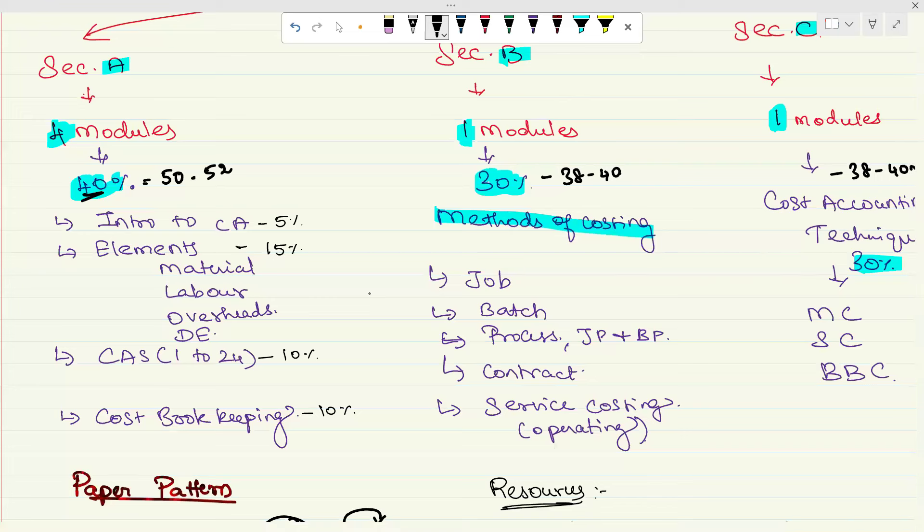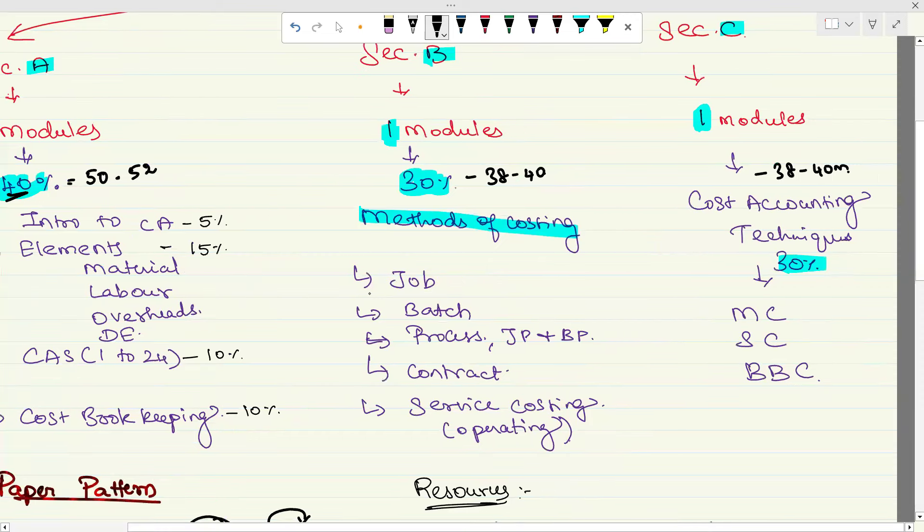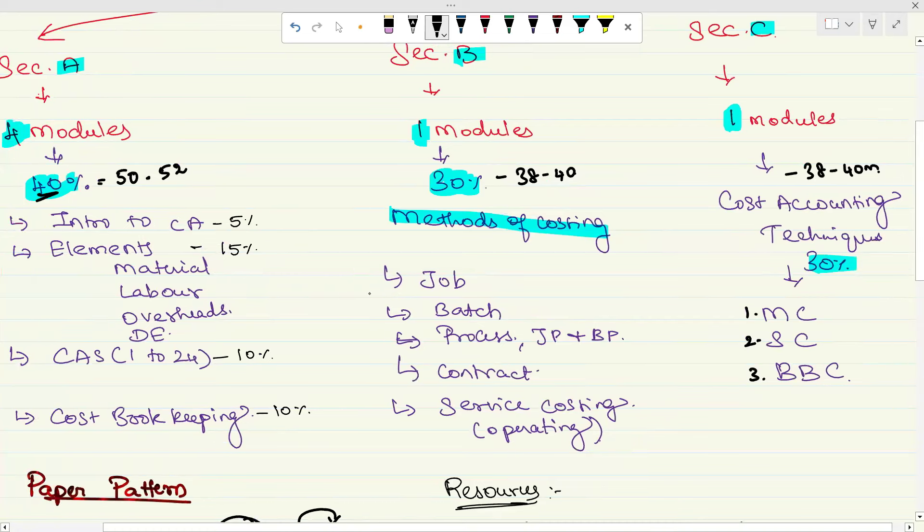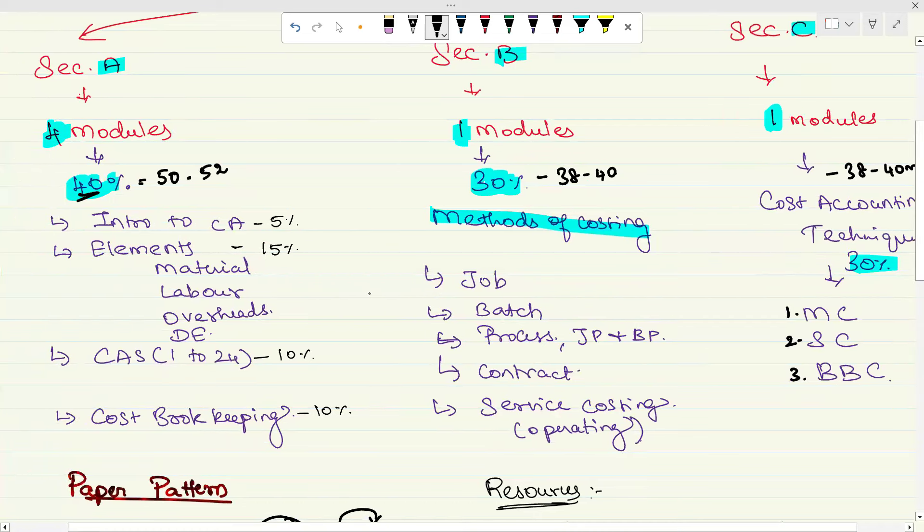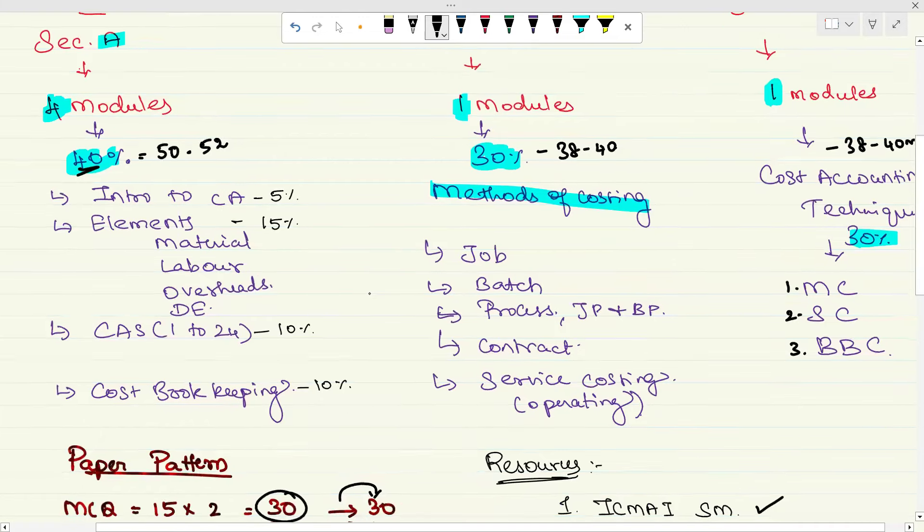If I quickly run through methods of costing: job, batch, process and joint product, contract costing, service costing also known as operating costing. Then if you come to cost accounting techniques: marginal costing, standard costing, BBC - budget and budgetary control. We have discussed everything, what is the percentage.